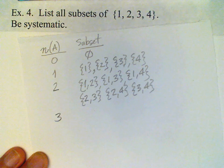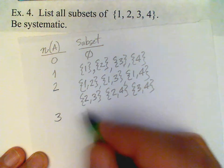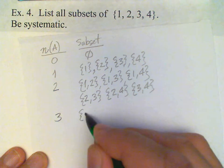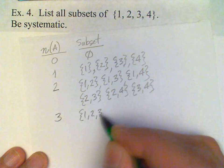Three element subsets, there are four of these, and you can see that because we can leave out each element in turn. So {1, 2, 3}, that leaves out 4,